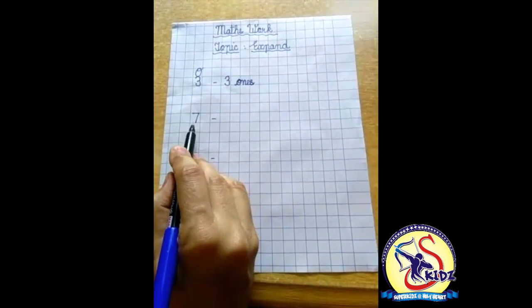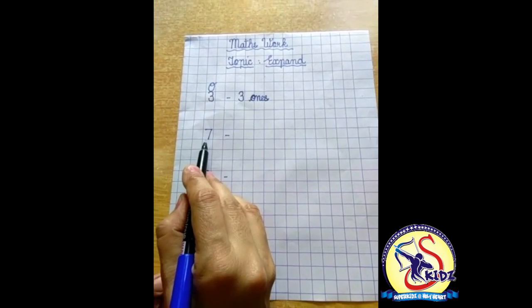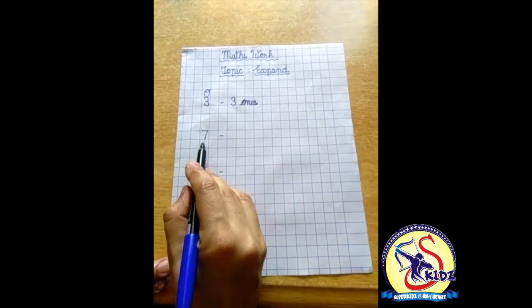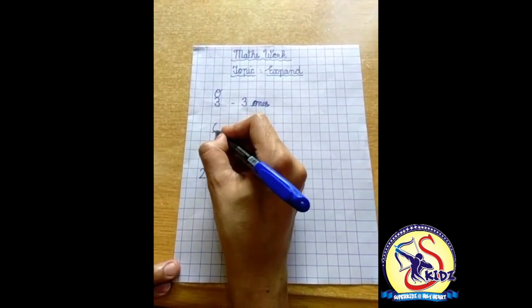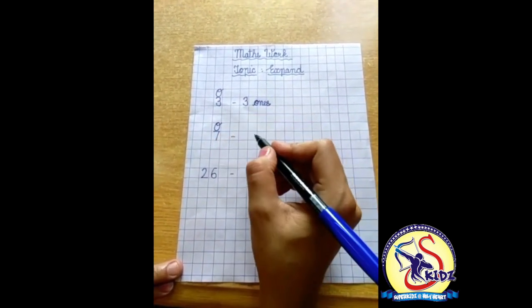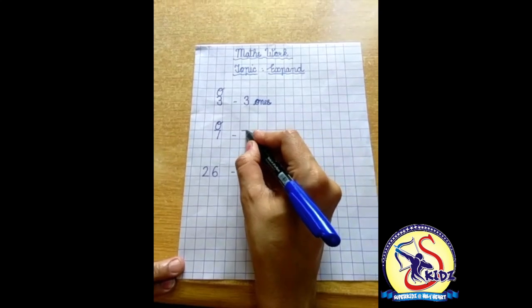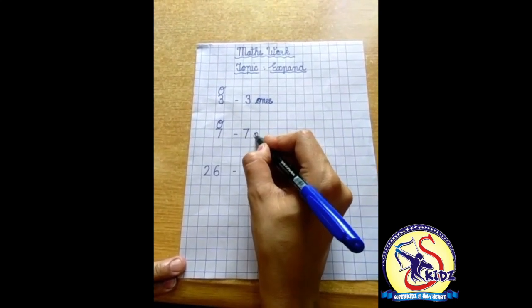Now see, next is 7. 7 is also a single digit number. So what we write? O. So the answer we get is 7 ones.